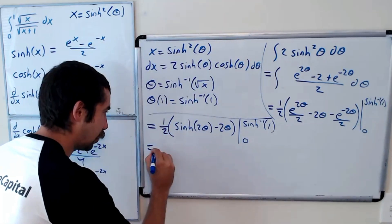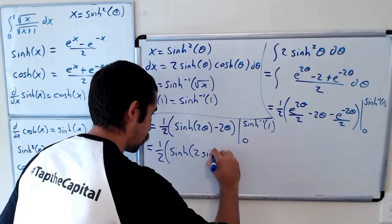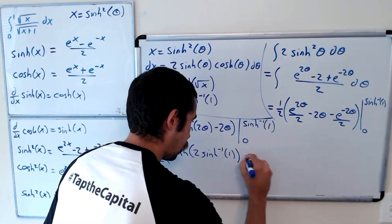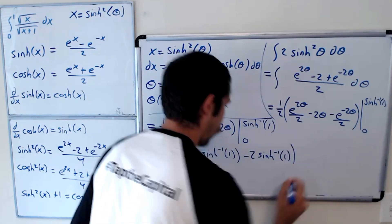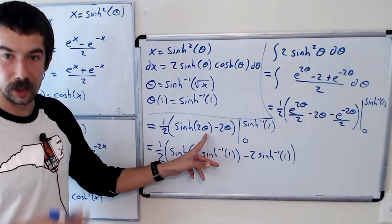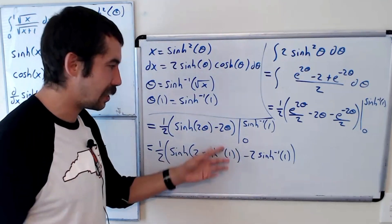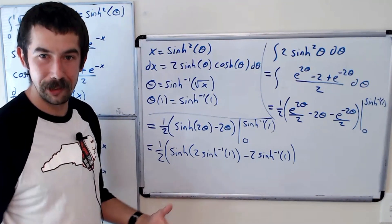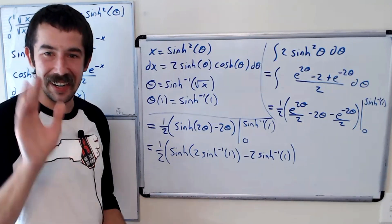The final answer is (1/2)[sinh(2 sinh⁻¹(1)) minus 2 sinh⁻¹(1)]. Plugging in 0 gives 0, so the lower bound contributes nothing. Let me know in the comments if you've ever done hyperbolic trig substitution — it's useful for some integrals, though not a ton. Thanks for watching!